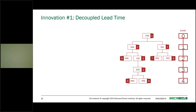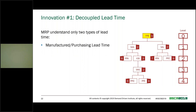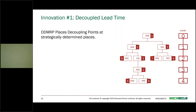The first innovation is decoupled lead time. MRP only understands two types of lead time: manufacturing or purchase lead time, and the cumulative lead time through the entire structure. Neither is very accurate for the lead time you'd give a customer. For example, a finished product may have a manufactured lead time of one day — very few of you would quote one day to a customer. And the cumulative lead time might be 16 days, which is too long. So we have a problem figuring out our lead times.